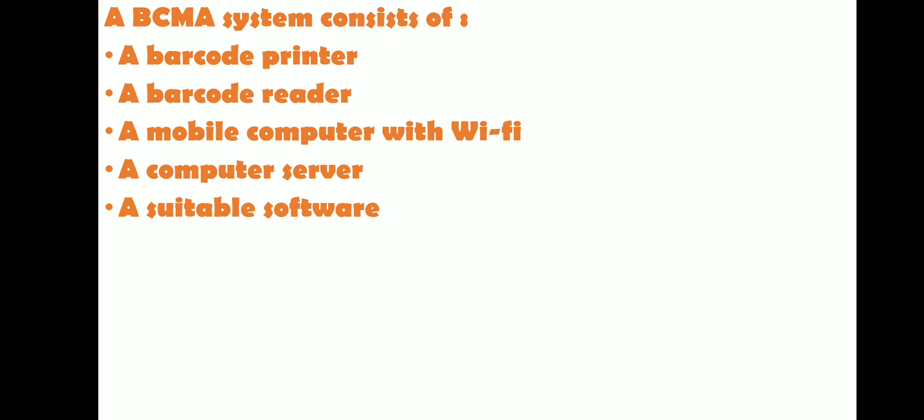What equipment is required? First, a barcode printer — to print and stick barcodes for batches, drugs, and patients. Second, a barcode reader or barcode scanner. Third, a mobile computer with Wi-Fi, so you can send any information wirelessly. Fourth, a computer server with a network connection. And fifth, suitable software that can handle the barcode system.